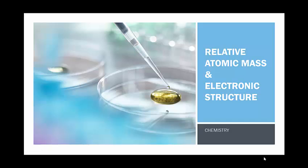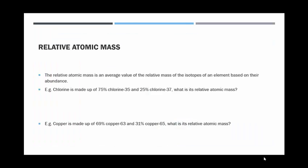Hi, welcome to this revision session for chemistry on relative atomic mass and electronic structure. Relative atomic mass is the average value of the relative mass of an isotope of an element based on their abundance.